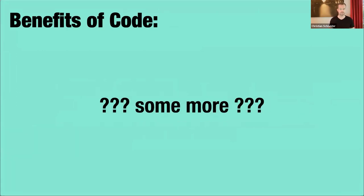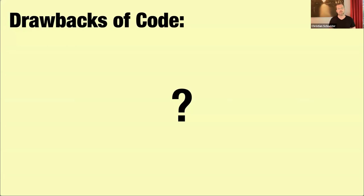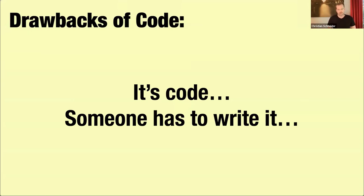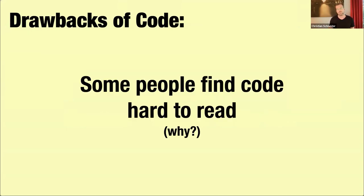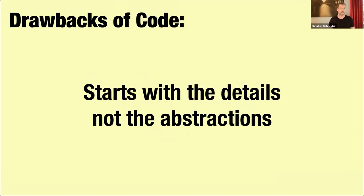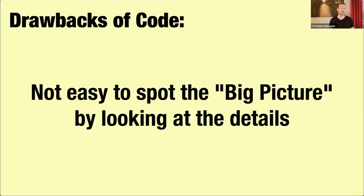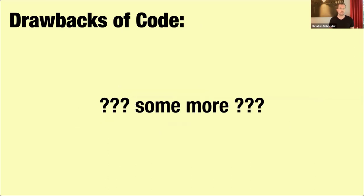If the project received lots of merge requests and grew over time but the threat model did not, that's basically a sign something's been left over. Developers hopefully love code and know the application best. But what about the drawbacks of having a threat model as code? Someone has to write it. Some people might find code hard to read, and it starts with the details — not the abstractions — so it's not easy to spot the big picture just by looking at the details first.